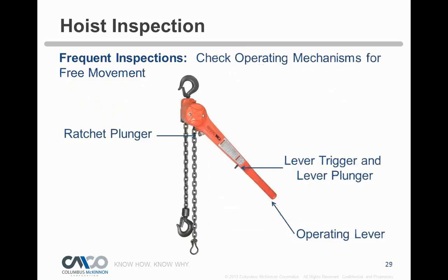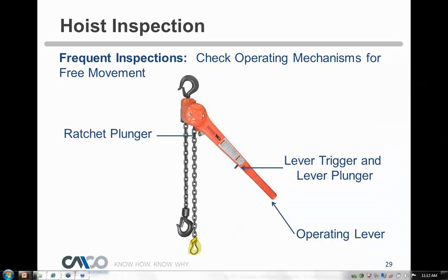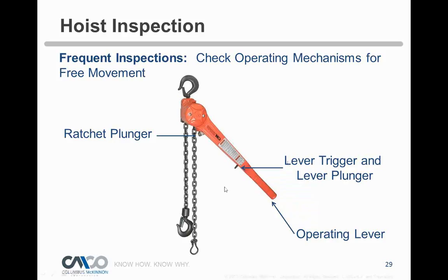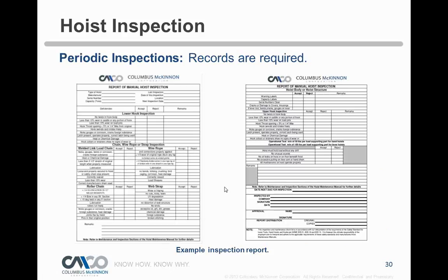For frequent inspections, check operating mechanisms for free movement — on a lever tool, check the ratchet, the plunger, and that all mechanisms spring back properly. Look over the handle for bends, signs of overload, or cracks. Check the upper hook suspension — it should rotate freely, same for the lower. Most lever tools have five feet of chain — look it over. Critically, ensure the safety end ring at the end of the chain is on there. People have been killed in the industry by not knowing that end ring was supposed to be there.